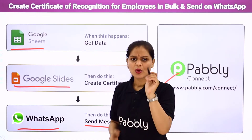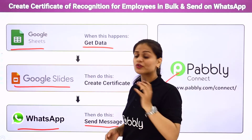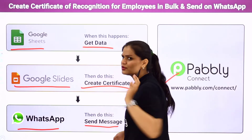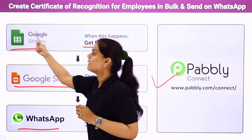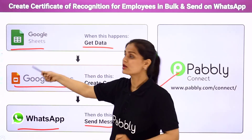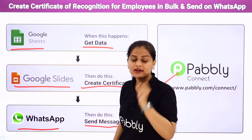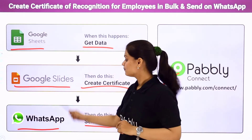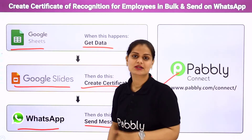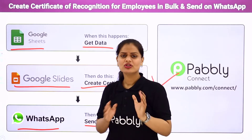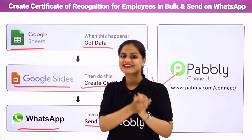With the data available in my Google Sheet, the certificates will be created automatically in bulk. If I have hundreds of employees, the certificates are going to get created automatically in Google Slides for all of them with their details. Then the message will be sent on WhatsApp to all the employees automatically — all with the help of Pabbly Connect, saving our time.